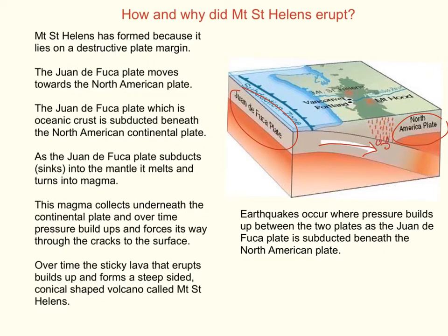You get blobs of magma. This magma collects underneath the continental plate and over time develops into a magma chamber. Pressure builds up and the magma is forced to the surface through cracks in the continental plate. When this magma reaches the surface, it oozes out as sticky lava, and over time it builds up into layers to form a steep-sided cone-shaped volcano, called a composite volcano.